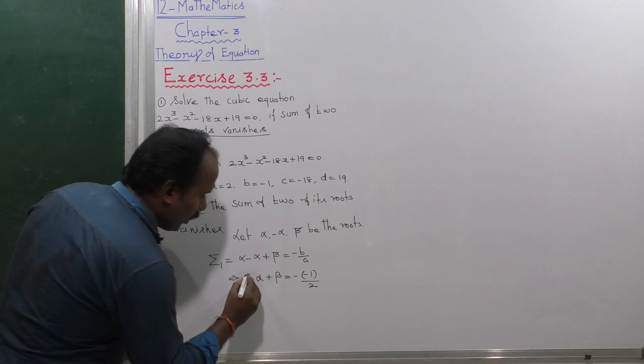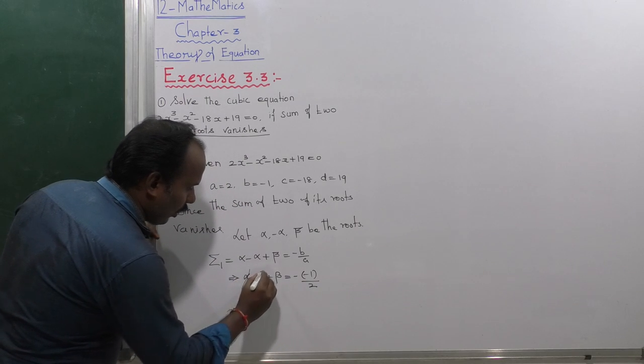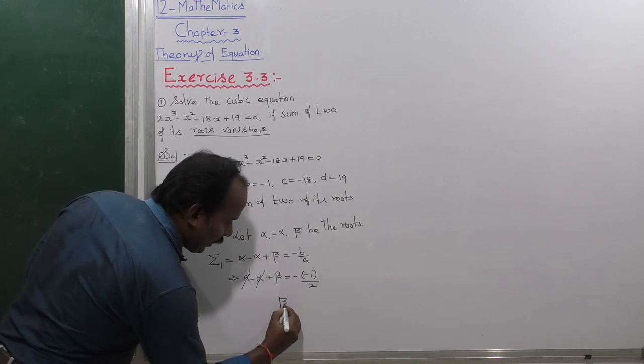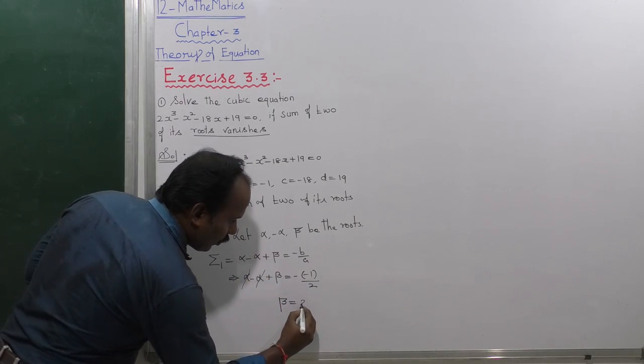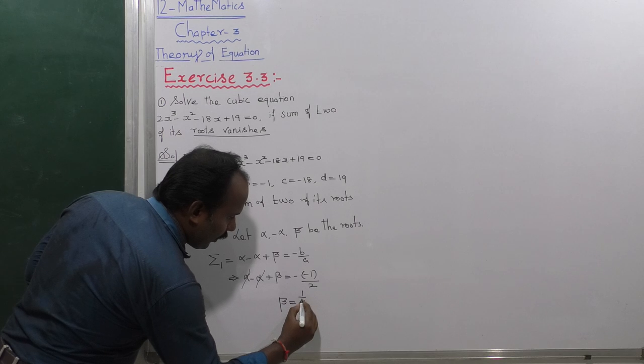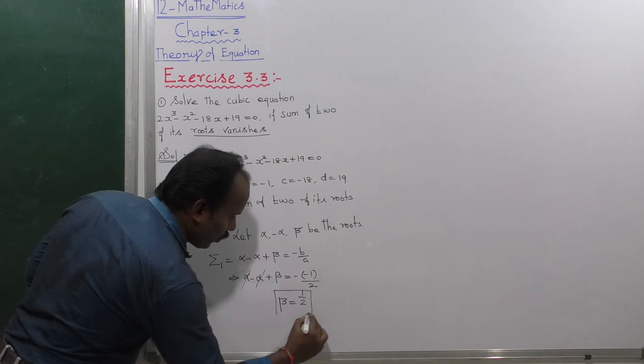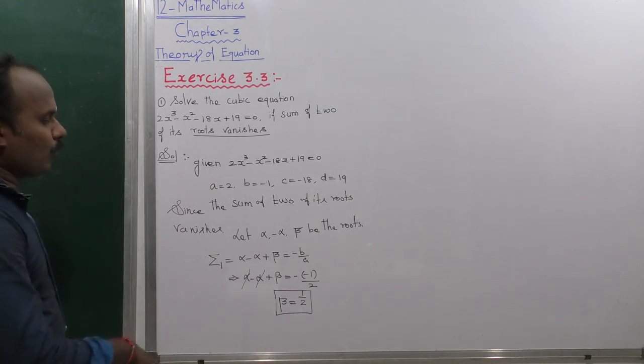Since b = -1 and a = 2, we get -b/a = -(-1)/2 = 1/2. The alpha terms cancel, so beta = 1/2. We have found the value of beta.